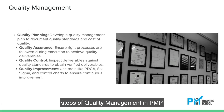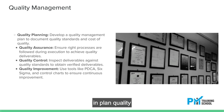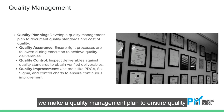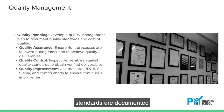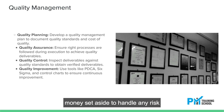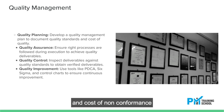Steps of Quality Management in PMP. In planned quality, we make a quality management plan to ensure quality standards are documented and the cost of quality is mentioned — money set aside to handle any risk — consisting of the cost of conformance and cost of non-conformance.